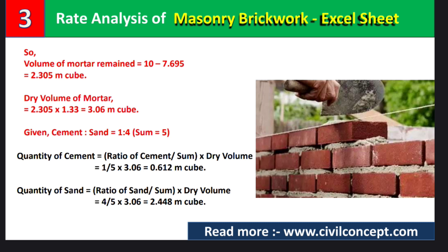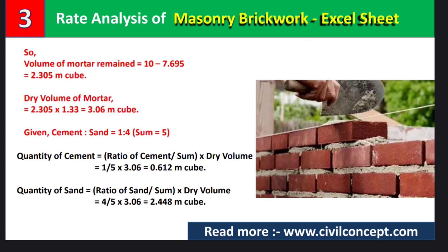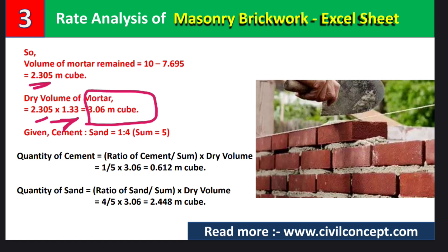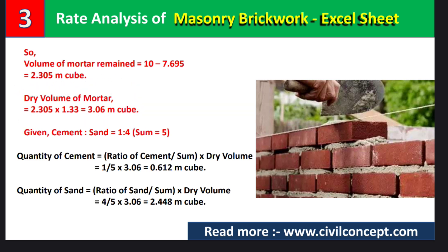This is the wet volume, so we need to convert it to dry volume. To calculate dry volume, we add 30 to 33 percent to the wet volume. Taking 33 percent, we multiply by 1.33: 2.305 × 1.33 = 3.06 cubic meters. This is the dry volume of mortar, and all further calculations will use this dry volume.